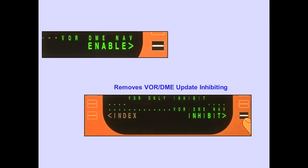With Enable displayed on the VOR DME Navigation Line, pushing the VOR DME Navigation Line Select key removes VOR DME Inhibiting, displays dashes on the left and right sides of the VOR Only Inhibit Line, and displays Inhibit on the VOR DME Navigation Line.